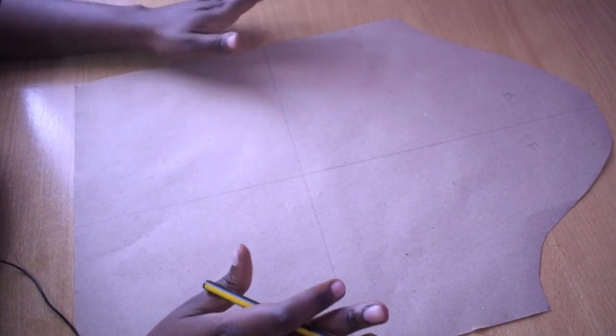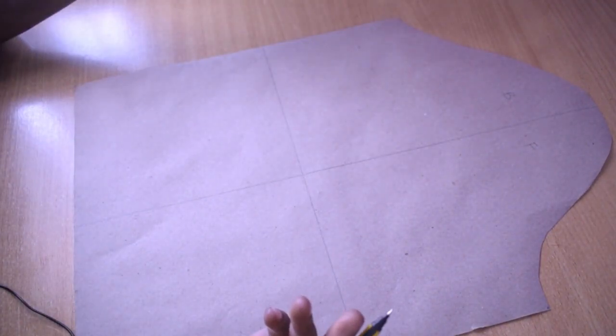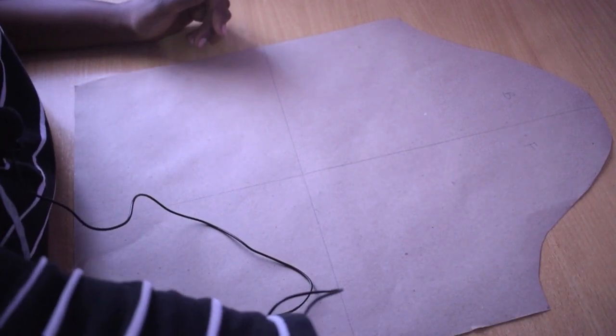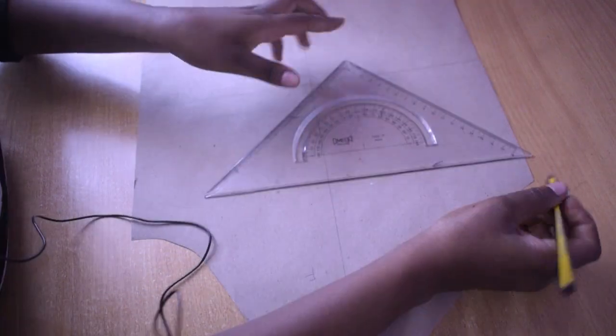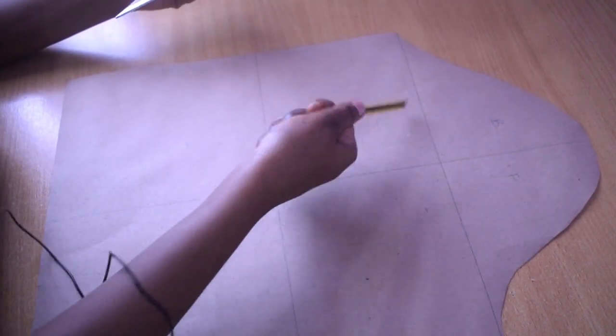So you'll need your sleeve block which you've traced out from your block. If you haven't watched my video on how to make a sleeve block, I have it. You can watch it first, trace out the block, and then you have this. Let me make this through the sleeve right here. This is the front, this is the back.